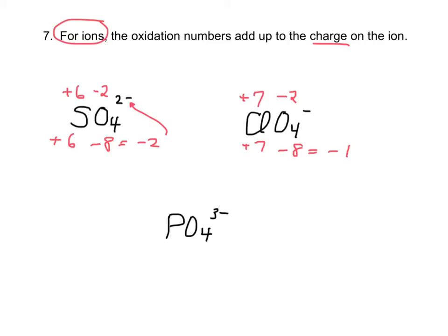And then phosphate, -2, -8, this is four of them, equals -3. So the phosphorus must be +5.